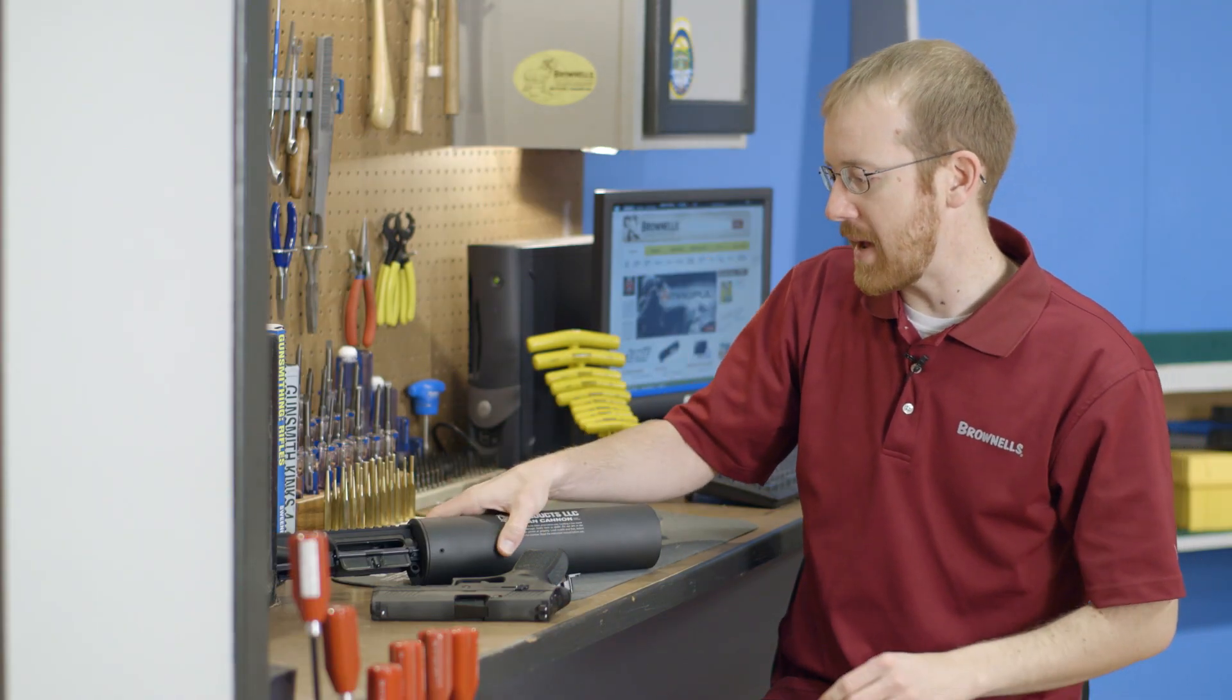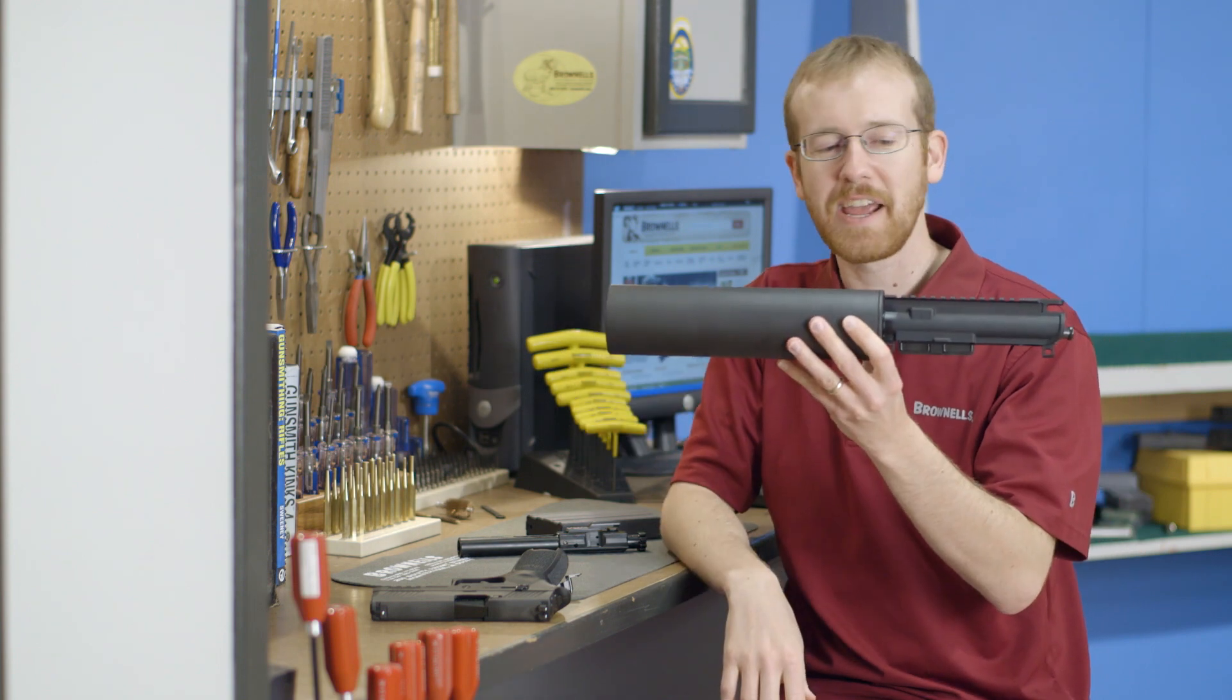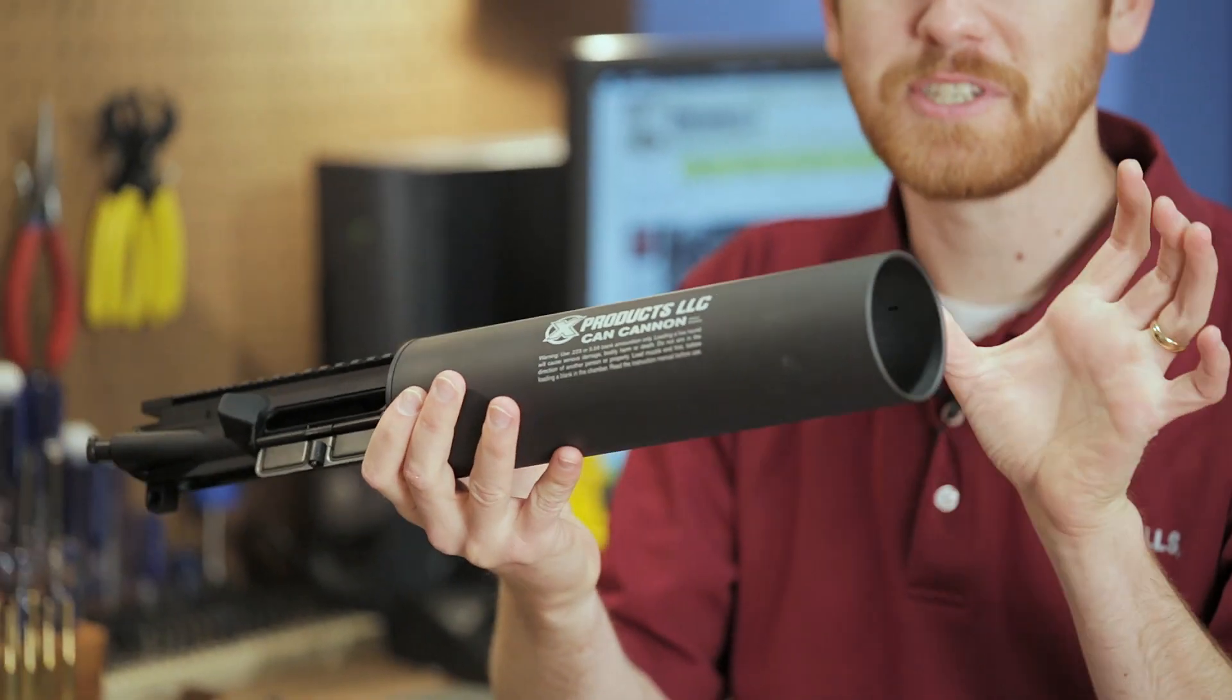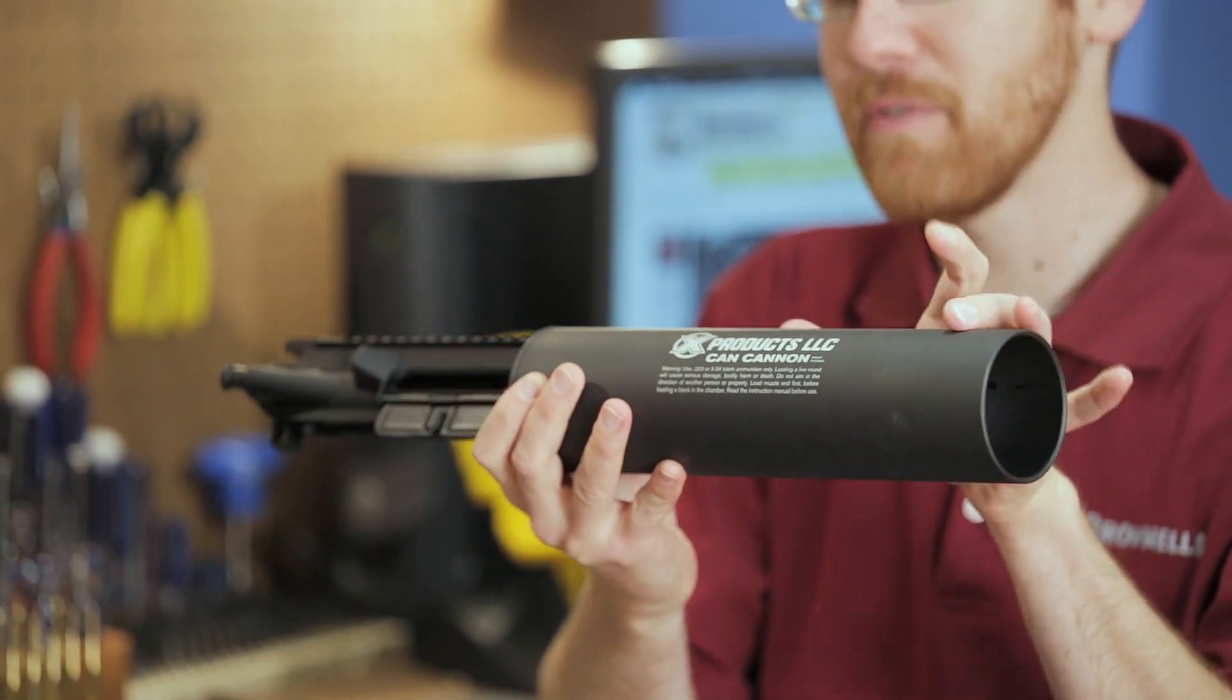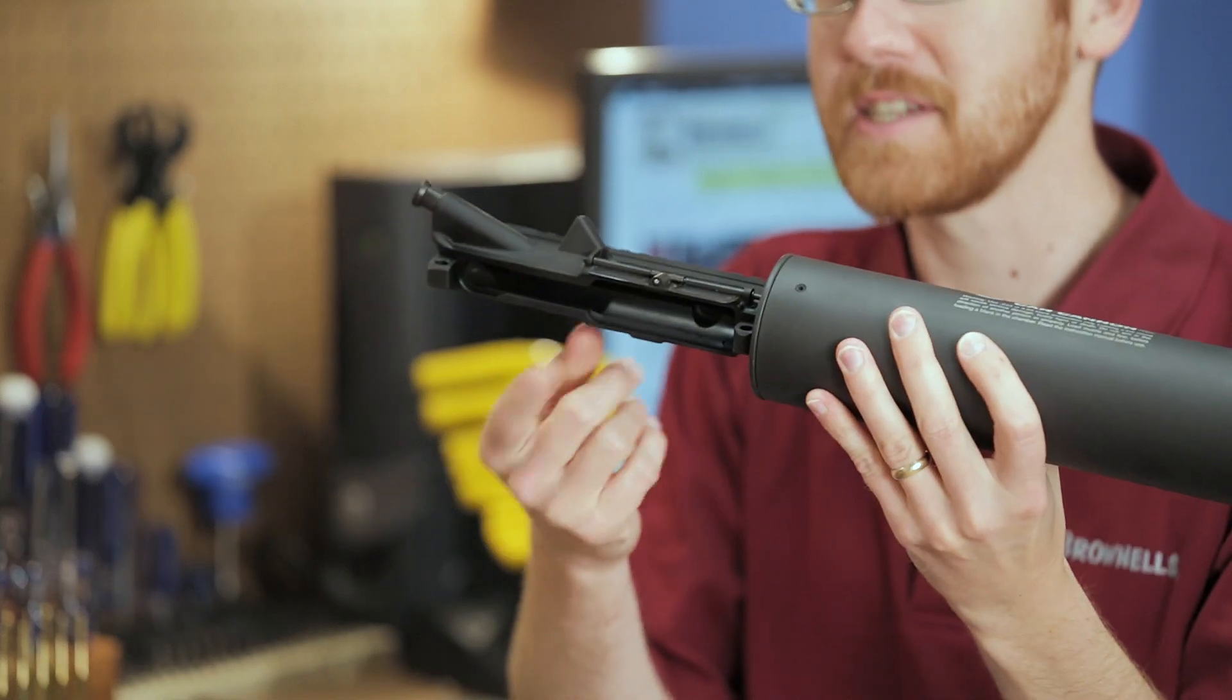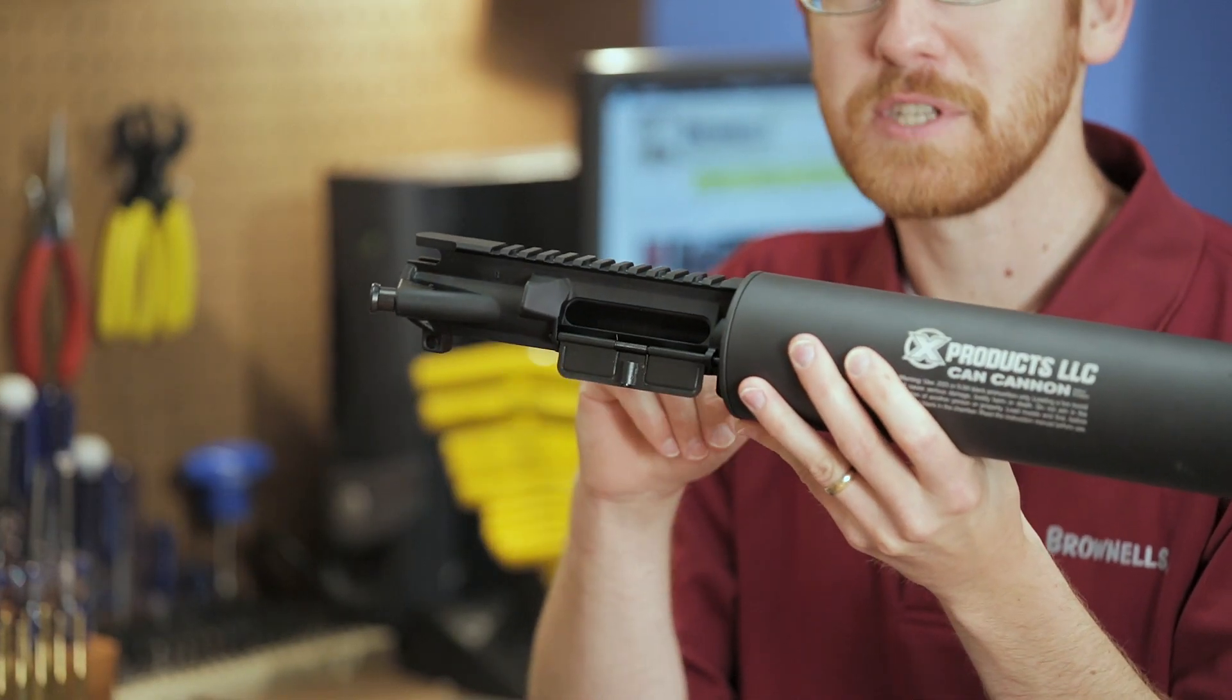And next up from X Products we've got the can cannon. This little guy here launches standard pop cans or other beverages of your choice up to about a hundred yards. Just utilize the standard 5.56 blanks.